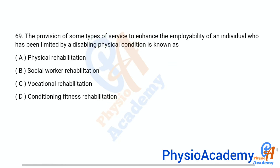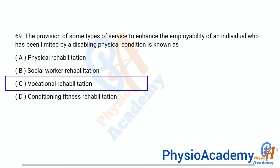Question number 69: The provision of some type of service to enhance the employability of an individual who has been limited by a disabling physical condition is known as — option A physical rehabilitation, option B social worker rehabilitation, option C vocational rehabilitation, option D conditioning fitness rehabilitation. The correct answer is option C: vocational rehabilitation.